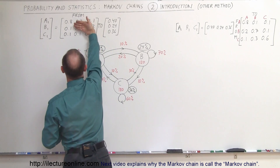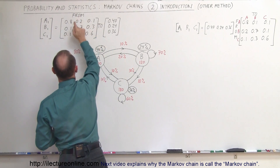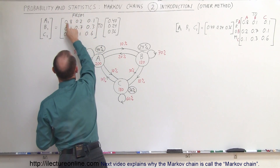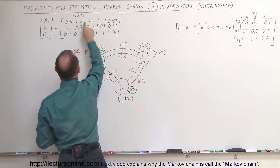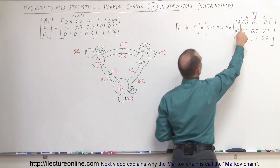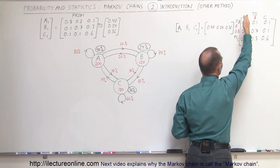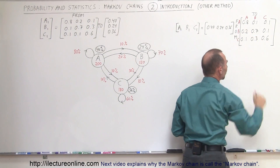So we take this matrix right here and we transpose it. So instead of 0.8, 0.2, 0.1 arranged horizontally, we have 0.8, 0.2, 0.1 vertically instead.